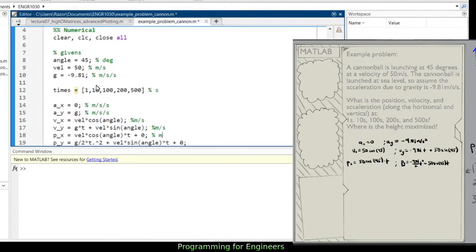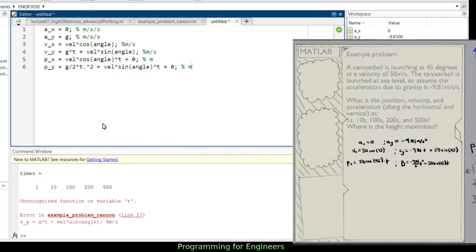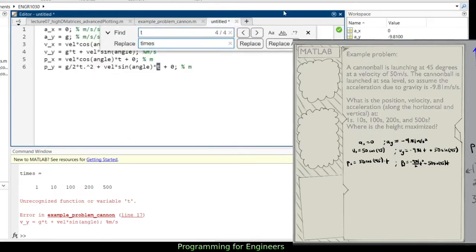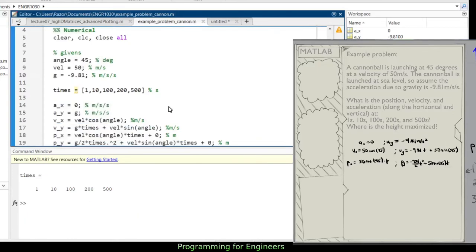And the position in y is g over 2 times t squared. And because I'm dealing with matrices, I'll go dot to the power, plus velocity times sine of angle times t plus 0. And these are both in meters. So now I've got the equations, and if I were to run this, I'd need to replace each of the t's with time.